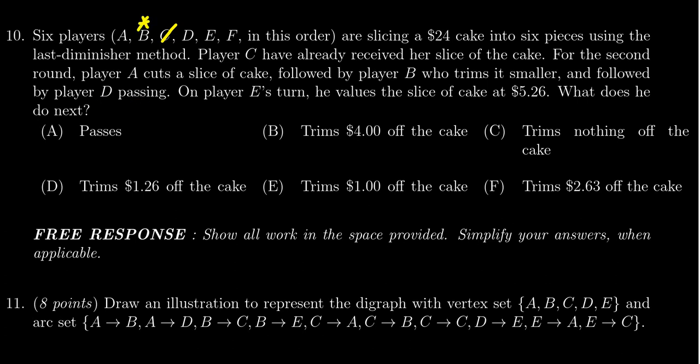So currently B is the last person to have cut the cake. It's now E's turn, and E values the current slice of cake at $5.26. What is E going to do? Now, what E does is if E values this cake at above a fair share, he's going to cut this down to a fair share, unless he's the last player to go. If he's the last player to go, he'll just grab what he has right there.